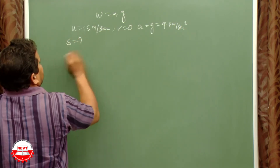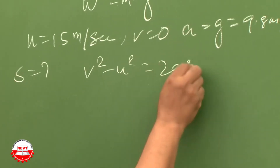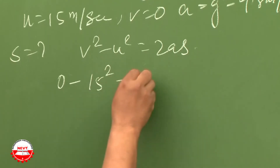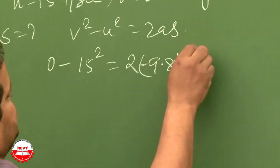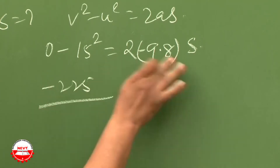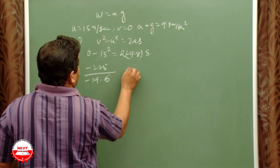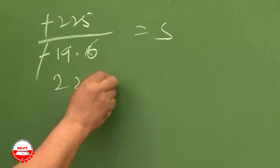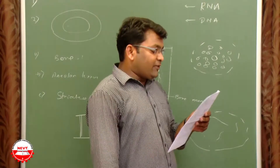Apply the formula: v² - u² = 2as. So 0 - 15² = 2 × (-9.8) × s, giving -225 = -19.6s, therefore s = 225/19.6 = 2250/196 meters.